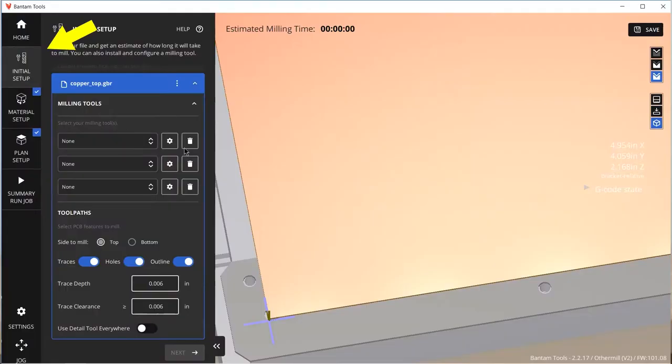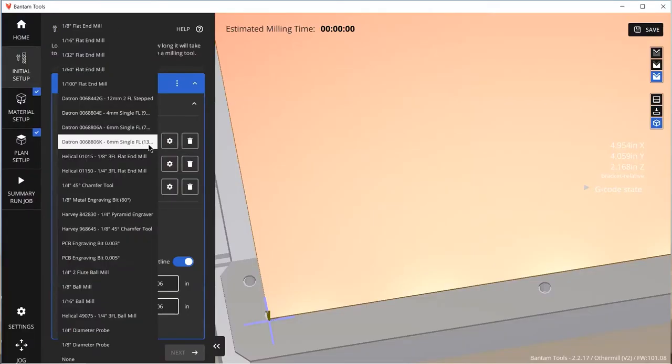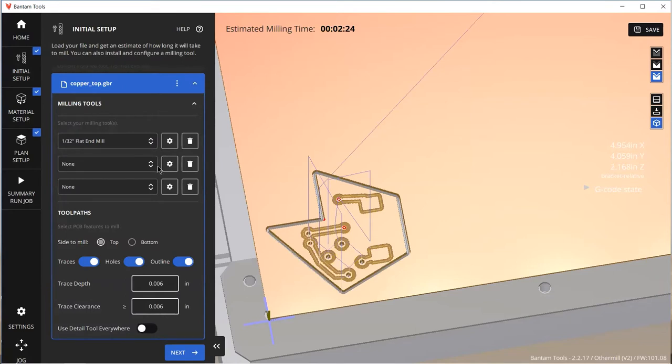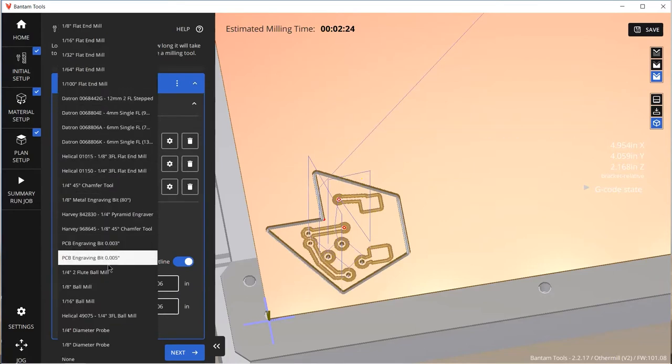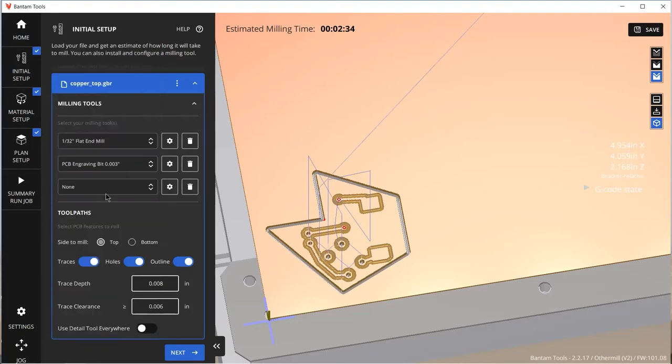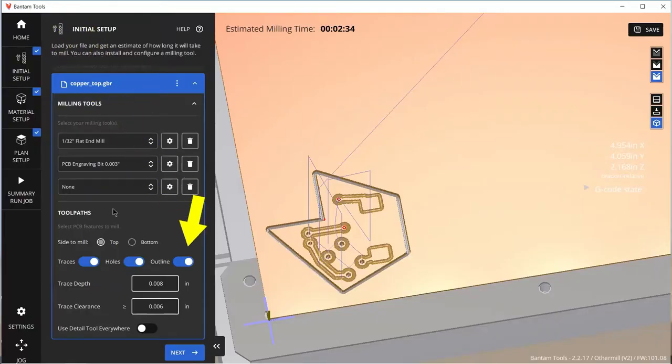Back in the software, we can choose our bit sizes for milling. For the purposes of this demonstration, I'm going to use an engraving bit as well as a 1 32-inch end mill for the hole and cutout operations. For a single-sided PCB, these will simply occur in order of smallest bit to largest bit. For double-sided PCBs, you'll want to turn off the cutout operation for the first pass to make the board flipping operation easier.